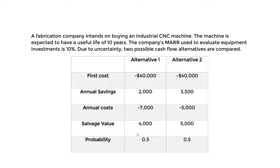Reading the question: a fabrication company intends on buying an industrial CNC machine. The machine is expected to have a useful life of 10 years. The company's MARR — minimum annual rate of return used to evaluate equipment investments — is 10%. Due to uncertainty, two possible cash flow alternatives are compared.